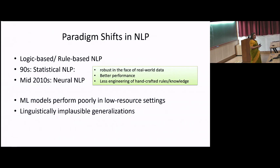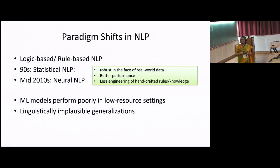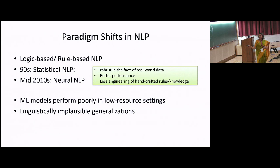There have been several paradigm shifts in natural language processing. In the beginning, there were logic-based and rule-based NLP. The major emphasis shifted in the 90s to statistical NLP. In the mid-2010s, along with other domains, neural networks started to form a very important component in many NLP systems. However, while this has been the case, machine learning models have not really benefited low-resource languages so much. But this is changing in recent years, and that is what this talk focuses on.